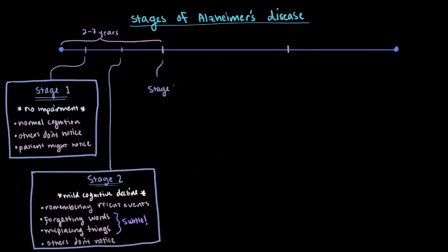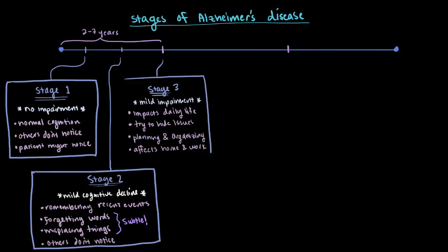Stage 3 is signs of early confusion and mild cognitive impairment. At this point, subtle difficulties can start to impact their daily life. The patient might consciously or even subconsciously try to hide these issues. They might have trouble retrieving words, remembering what was just said or read, and planning and organizing, which can all start to affect life at home or at work. It can still be difficult to diagnose Alzheimer's at this very early stage.